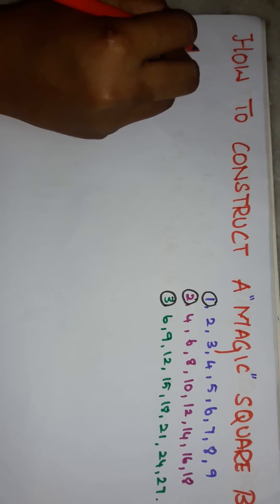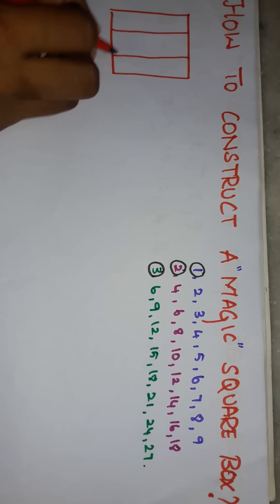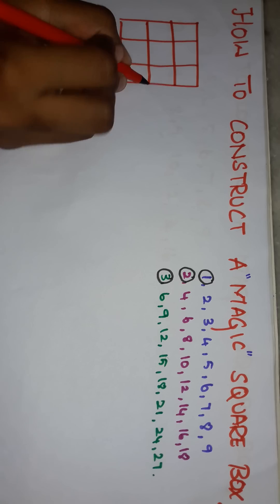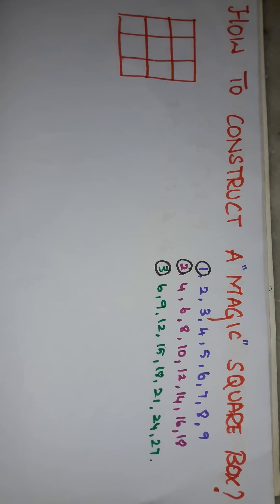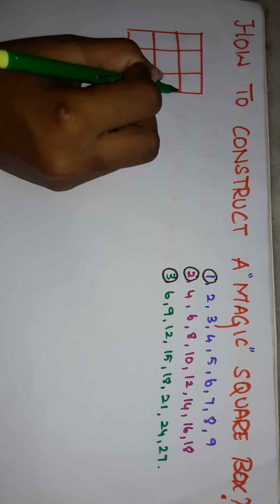First of all, draw a square with 9 boxes like this. And then, draw extra box at center on all sides.